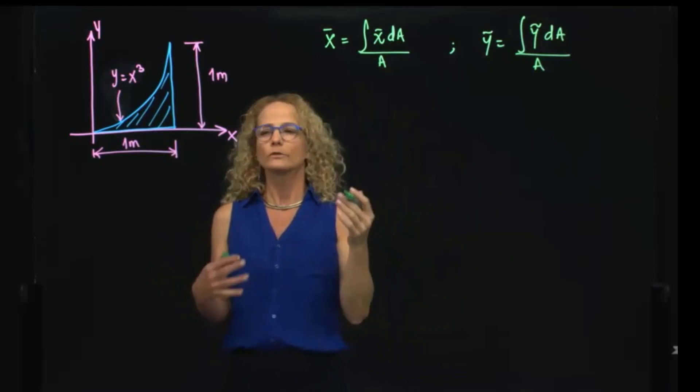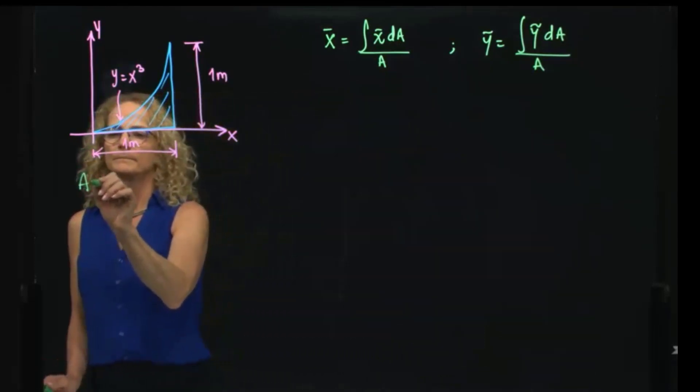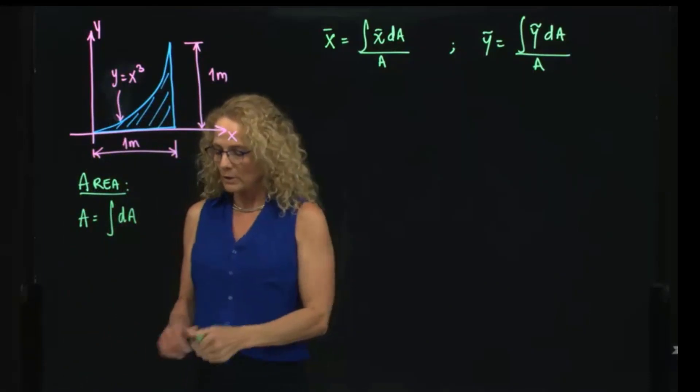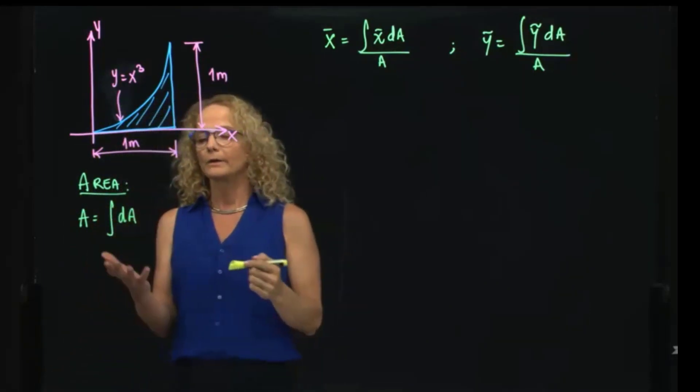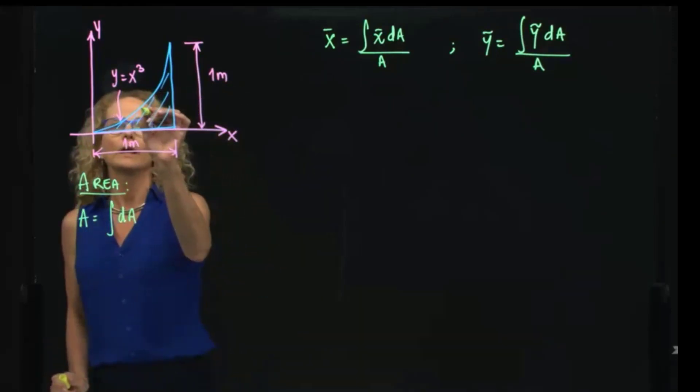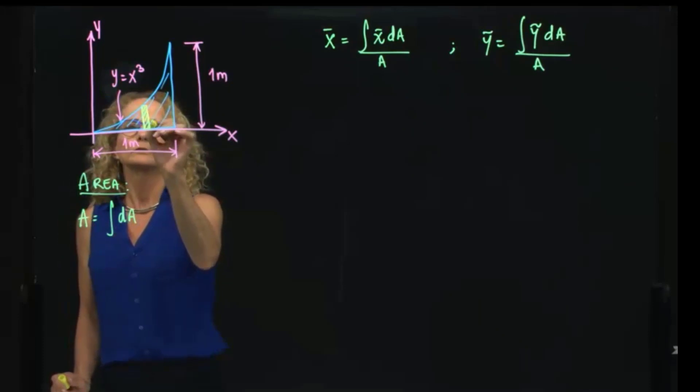So let's first determine the area. Know that the area will be the integral of the differential of area. So we have to choose either to integrate a differential of area, or we can do it as a linear integral by choosing a vertical strip.